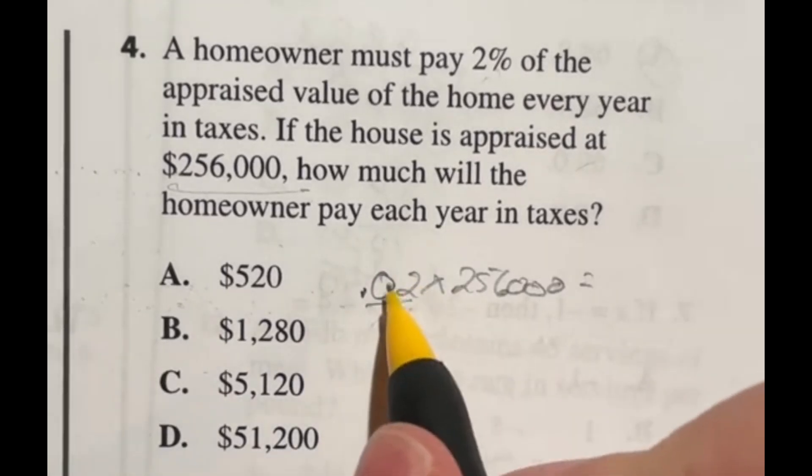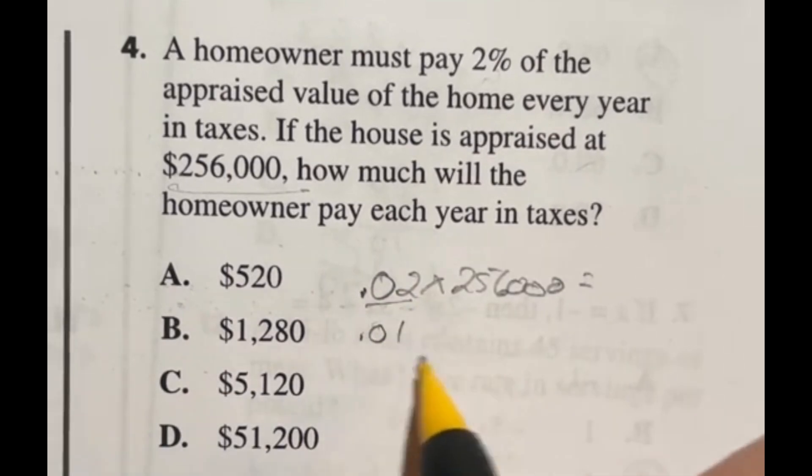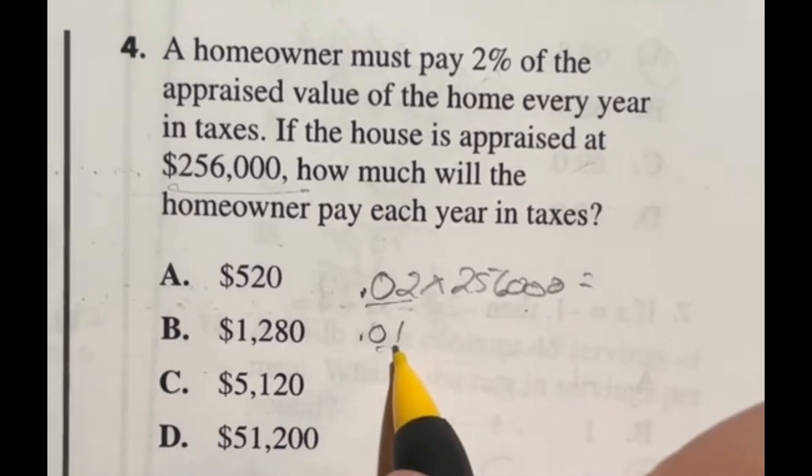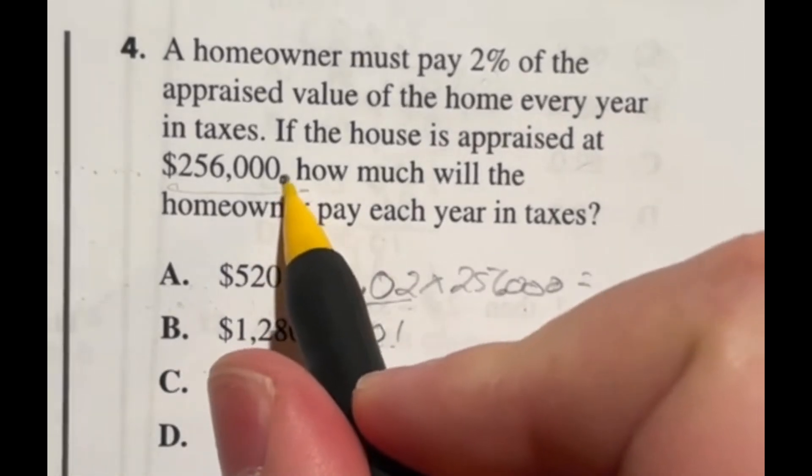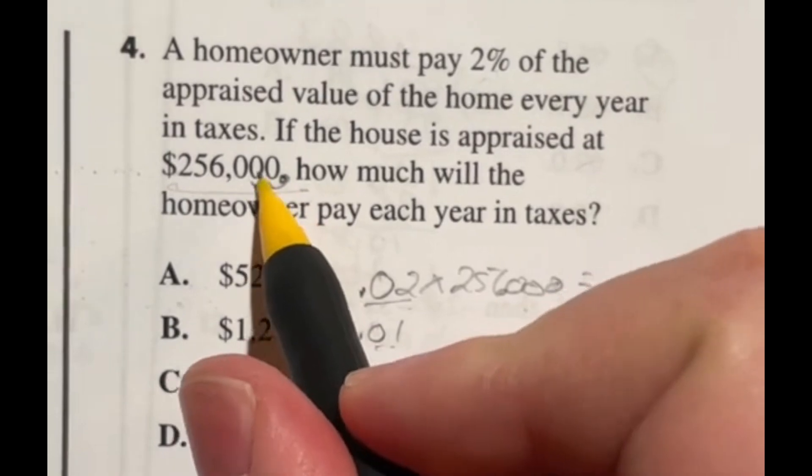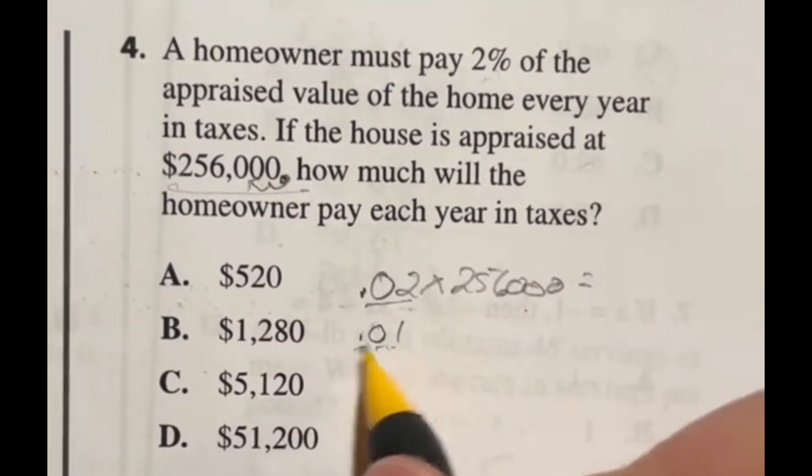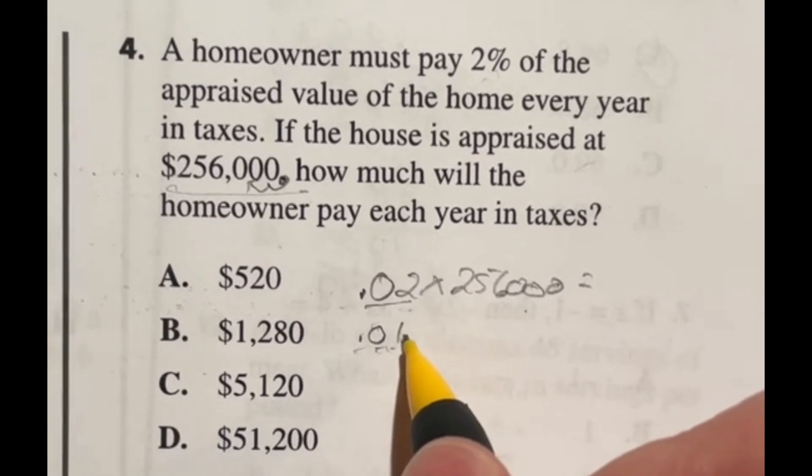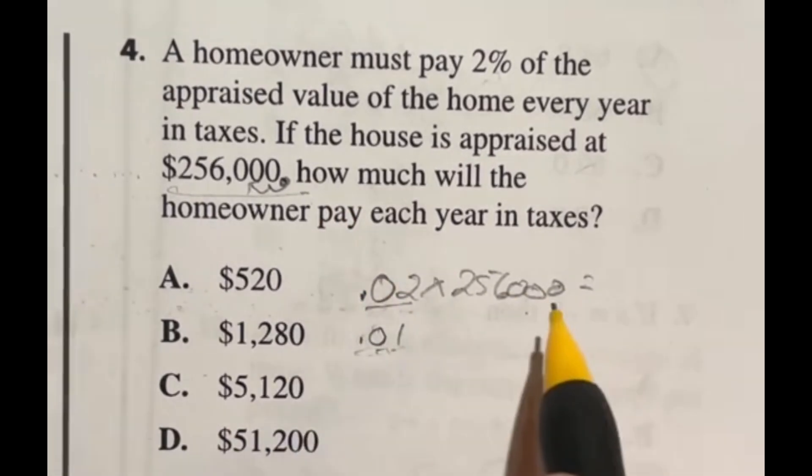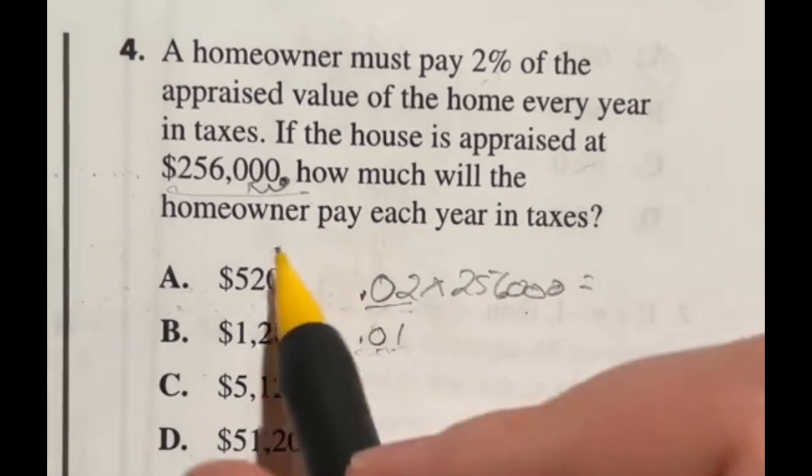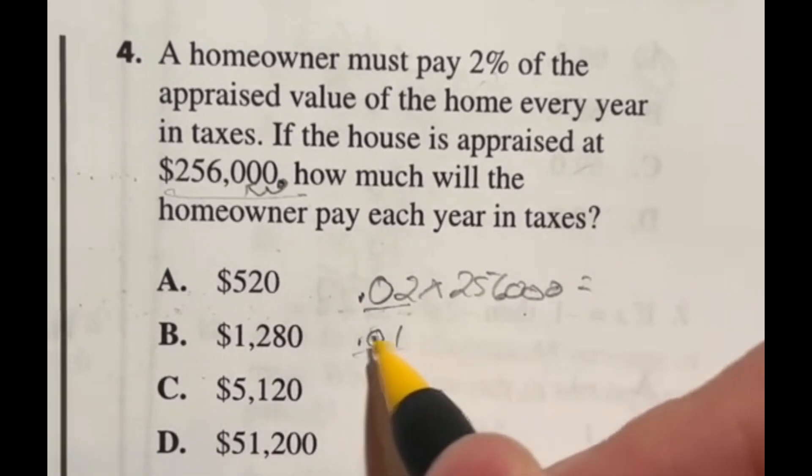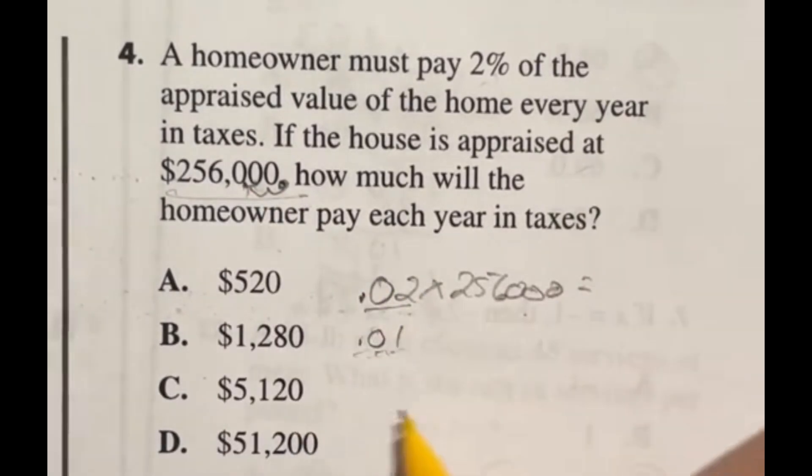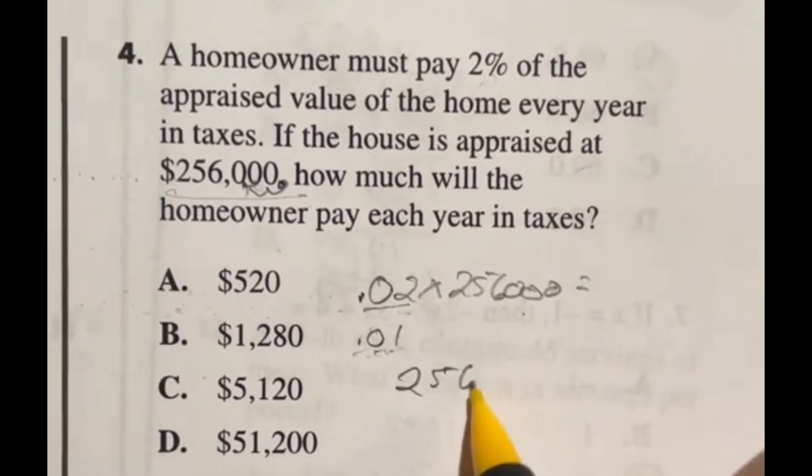2% is twice as much as 1%. And that's important because if you ever want to find 1% of a number, you just move the decimal place like the decimal would be here, you just move it two times to the left. And that's anytime you're multiplying by some form of 1 or 10 or 100 or in this case, 0.01, you just move the decimal any multiple of 10. So in this case, we're going to be moving the decimal two times to the left. So that gives us this 2,560. All right, so 2,560.